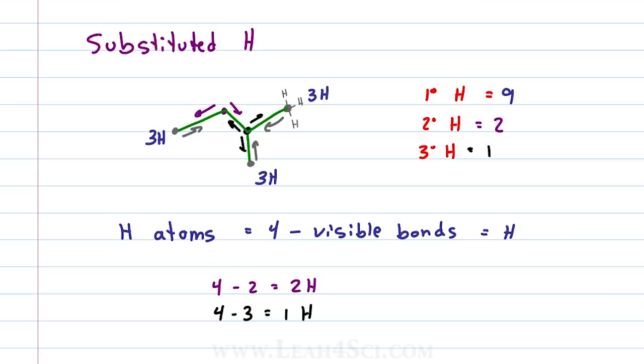We can't have quaternary hydrogen because if carbon can have a maximum of four bonds and all of those are bonds to carbon, we have nowhere left for a hydrogen.